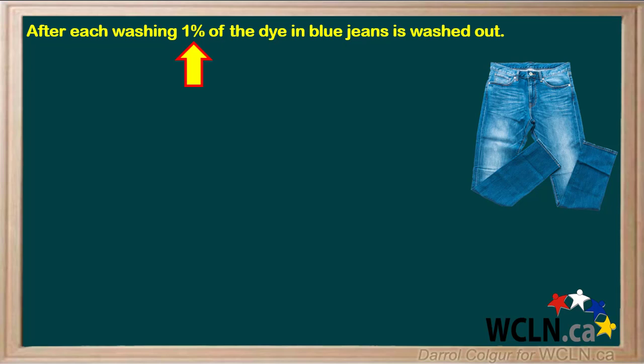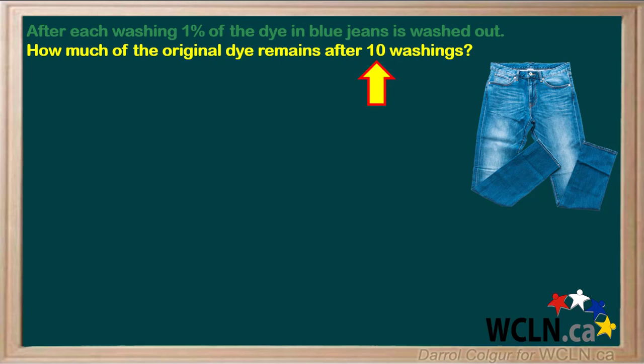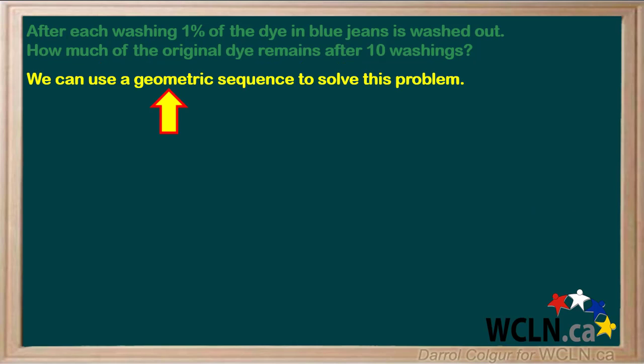We're given that after each washing, 1% of the dye in blue jeans is washed out. We're asked to find how much of the original dye remains after 10 washings. We can use the geometric sequence to solve this problem.